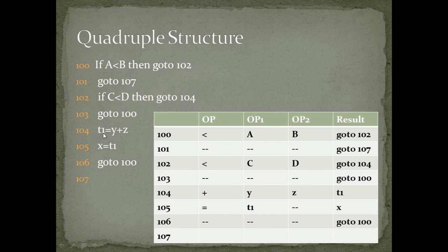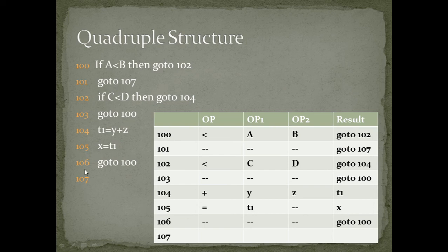At address 104, a temporary variable t1 is created. The operator is plus, operands are y and z, and the result is stored in t1. At address 105, x equal to t1: the operator is equal to, operand1 is t1, there is no second operand, and the result is stored in x. At address 106, there is no operator or operands — just the result go to 100. Address 107 is the statement outside the loop, so no operator, operand, or result is written there. This is the complete quadruple structure for the loop statements.